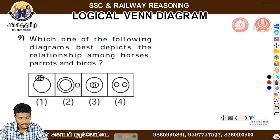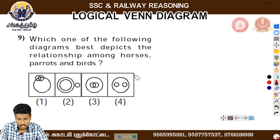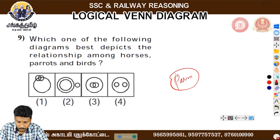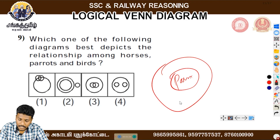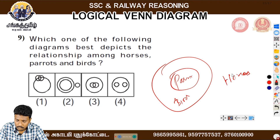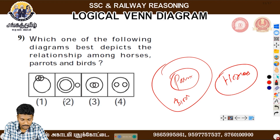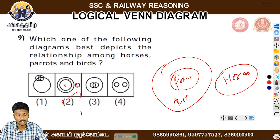Let's look at the last one: horses, parrots, and birds. Parrot is a bird, so parrot is inside the bird category. Horse is separate. This means parrot is a subset of birds, and horse is outside. The second option is the answer.